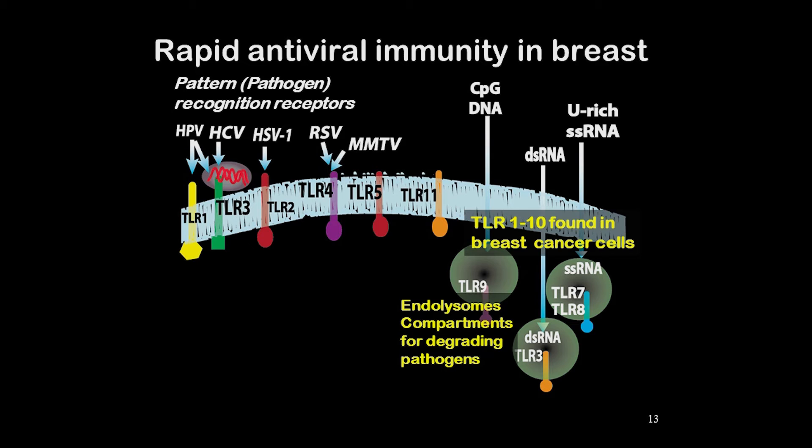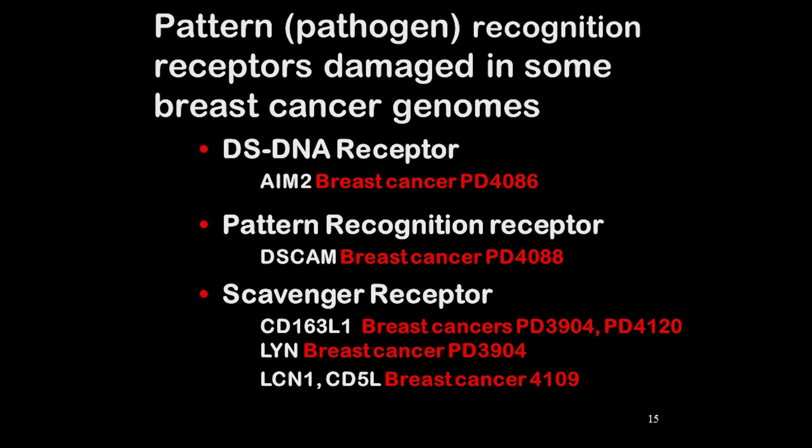The breast can rapidly respond to viral infection and hold it at bay until a stronger immune response develops. This shows toll-like receptors, or TLR receptors, in the innate immune system. TLR receptors are just one of the multiple types of pathogen recognition receptors needed for the rapid response in the breast to carcinogenic infections.